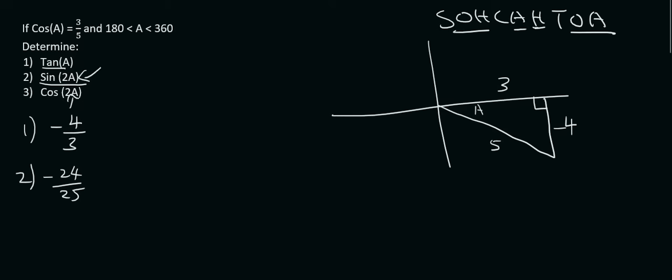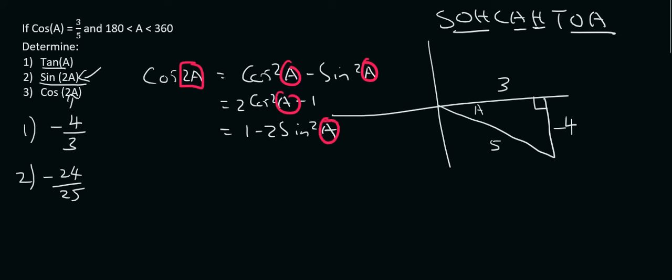Instead, we know from our formula sheet that cos 2A is either equal to that, or it could be this. These are all the same thing just by the way, it's just whatever you feel like choosing. The nice thing is though, is that on the left side it's a 2A, on the right hand side it's all just A's. So you can decide whichever one you like.